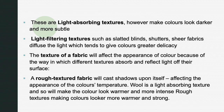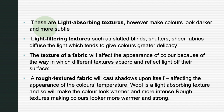Light-absorbing textures make colors look darker and more subtle. Light-filtering textures such as slatted blinds, shutters, and sheer fabrics diffuse the light, which tends to give colors greater delicacy. The texture of a fabric affects the appearance of color because of the way different textures absorb and reflect light. A rough textured fabric casts shadows upon itself, affecting the appearance of color and temperature. Wool is a light-absorbing texture and makes colors look warmer and more intense.